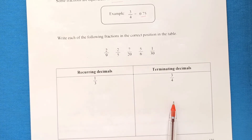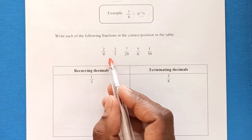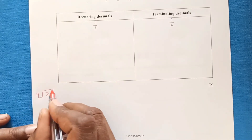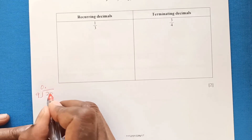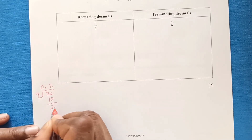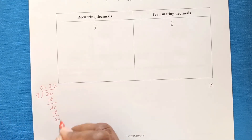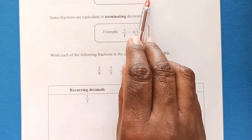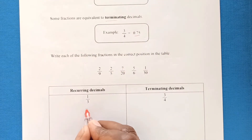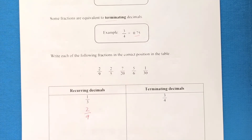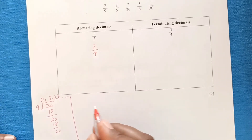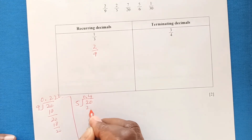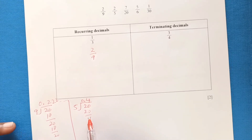Starting with 2/9: dividing 2 by 9 gives 0.222... — every time we get remainder 2, so it continues as a recurring decimal. Next, 2/5: dividing gives 0.4, which terminates. So 2/9 goes under recurring decimals and 2/5 goes under terminating decimals.